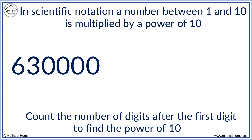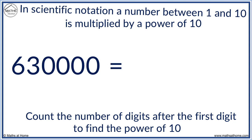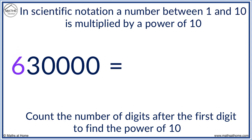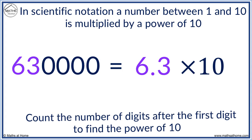Here is another example of 630,000. We write it as 6, followed by a point, then the 3. We multiply it by 10 to the power of 1, 2, 3, 4, 5.